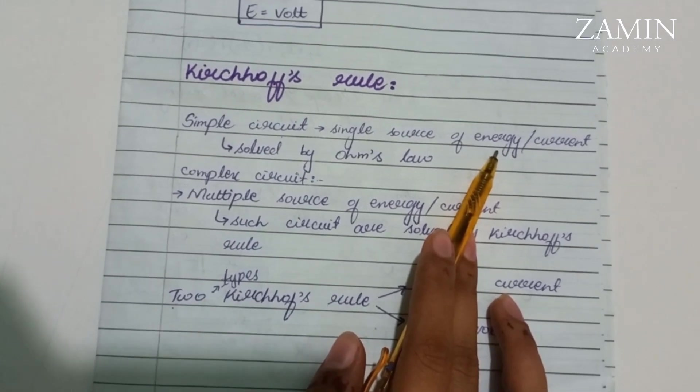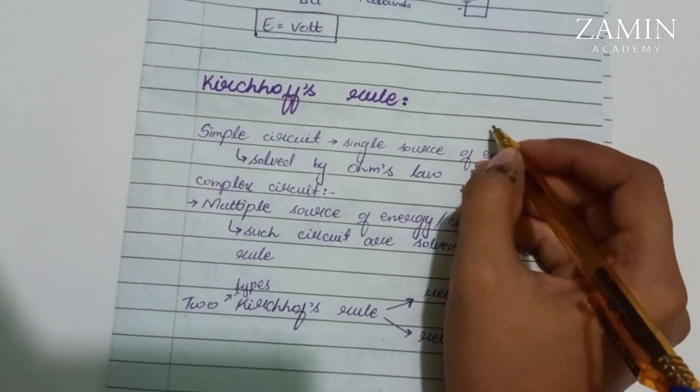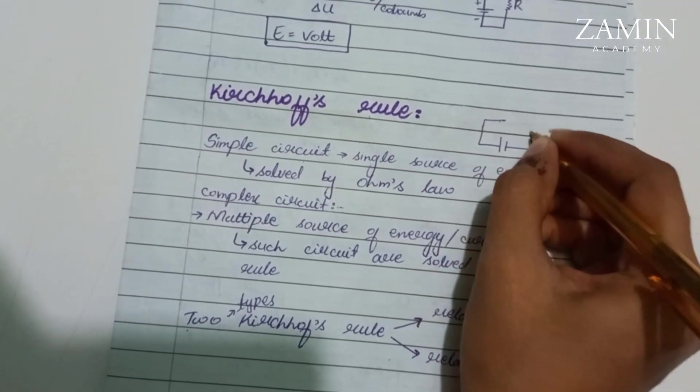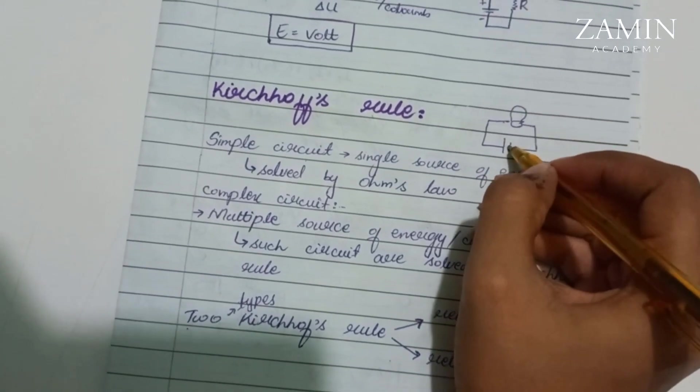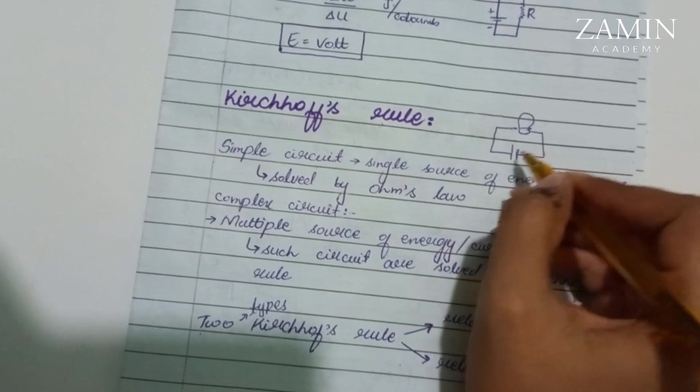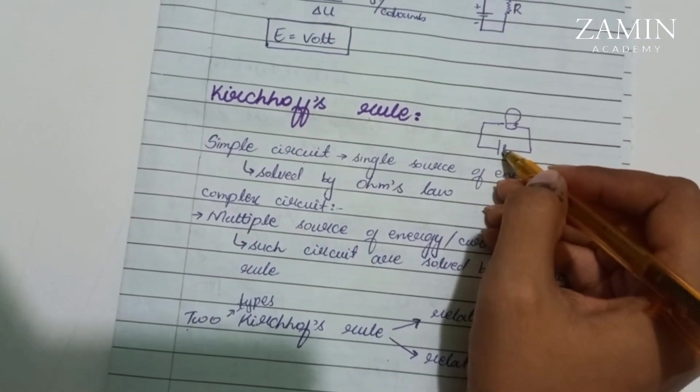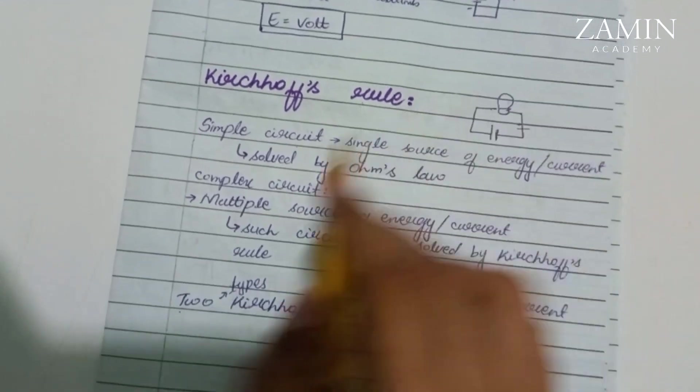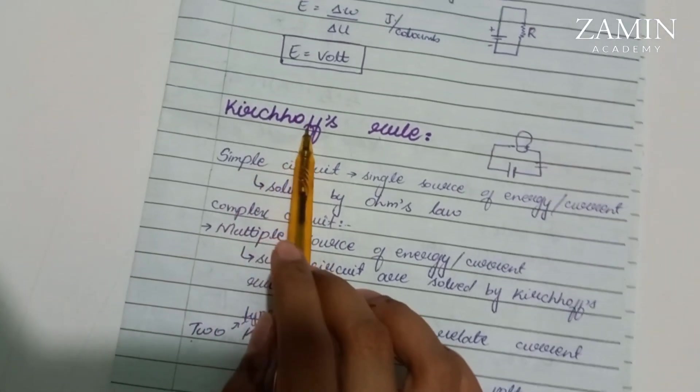This means that if there is a circuit having only one battery, for example here is a battery, then that circuit is a simple circuit. If a circuit has two or more than two batteries, then it's a complex circuit, and to solve complex circuits we use Kirchhoff's rules.